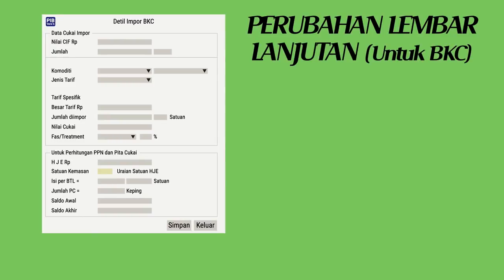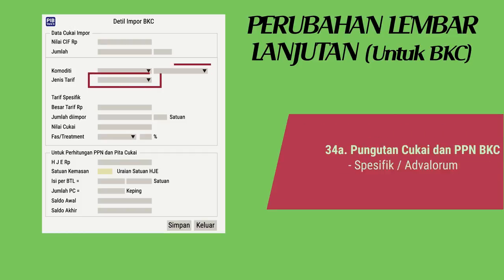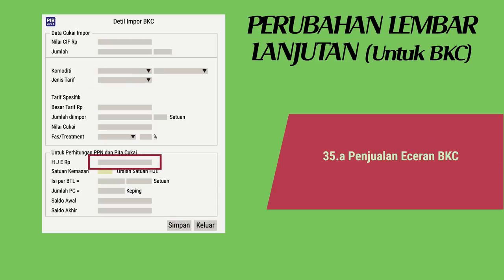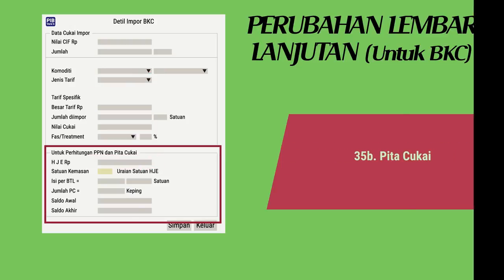Perubahan lembar lanjutan untuk barang kena cukai: (32A) Spesifikasi wajib barang kena cukai — HT, MMA, atau EA; SKT, SKM, atau SPM; golongan A, B, atau C; merek barang kena cukai. (34A) Pemungutan cukai dan PPN barang kena cukai — spesifik atau advalorem. (35A) Penjualan eceran barang kena cukai. (35B) Pita cukai.